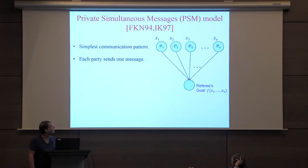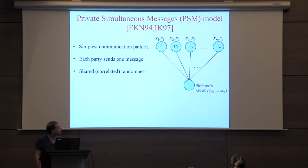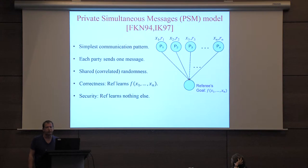This is the simplest communication pattern possible. There are n parties, each one holds an input, and there's a referee. The goal of the referee is to compute some function of the inputs. Each party sends one message independent of the other parties' messages. We need correctness and security, and for that the parties will have a shared random string. We think of it as a correlated string where each party holds part of the shared string — this is only for efficiency, not a security requirement.